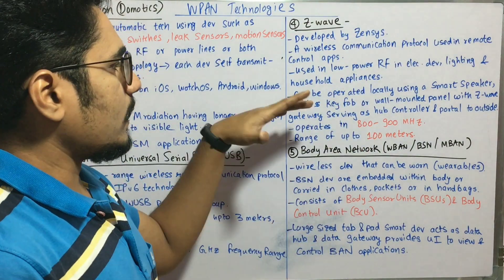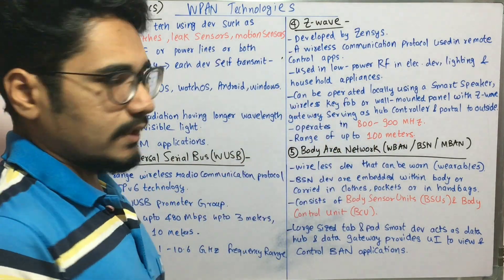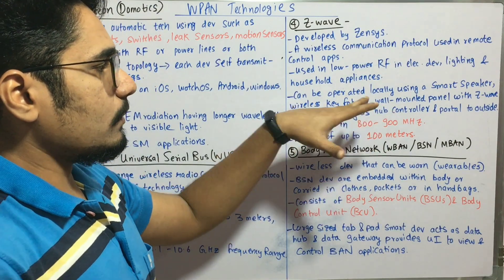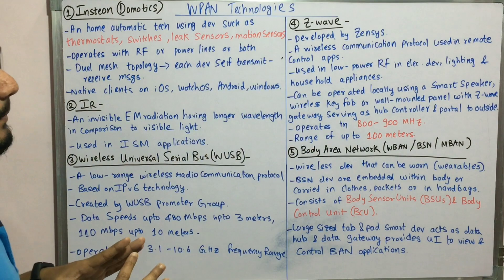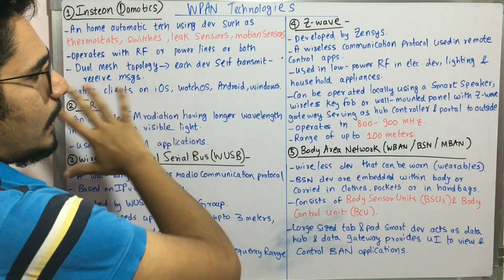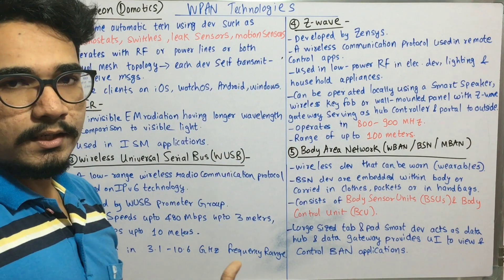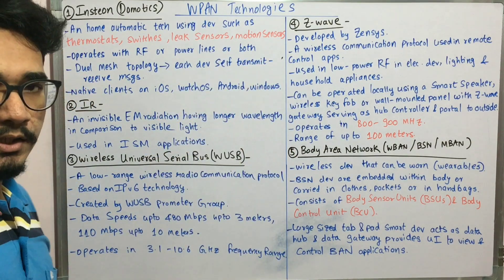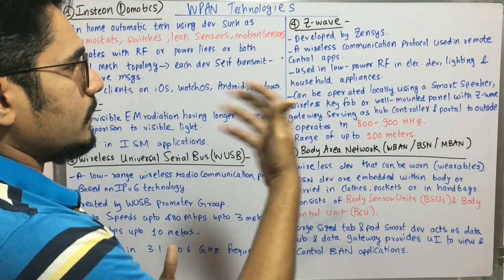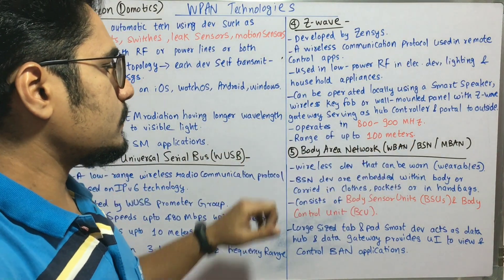It can be operated locally using a smart speaker or a wireless key fob device, or you can have a wall-mounted panel with Z-Wave. You can have some device or panel with a gateway that serves as a hub, through which you can control via a portal mounted outside or inside your house. It operates in the 800 to 900 megahertz range, and the range is up to 100 meters.